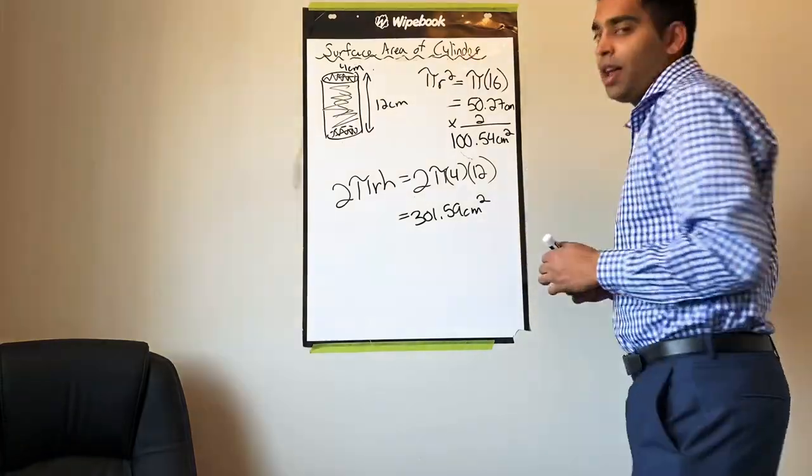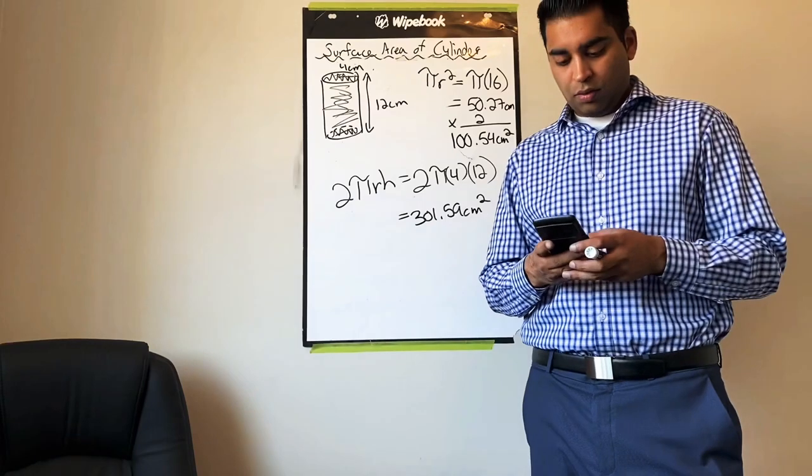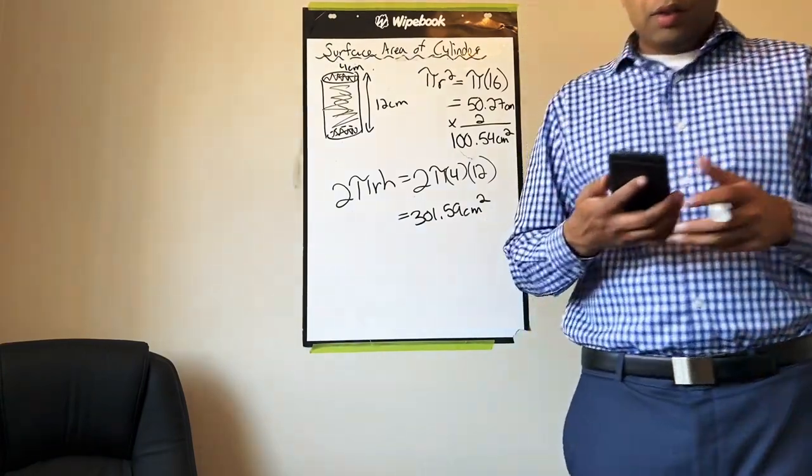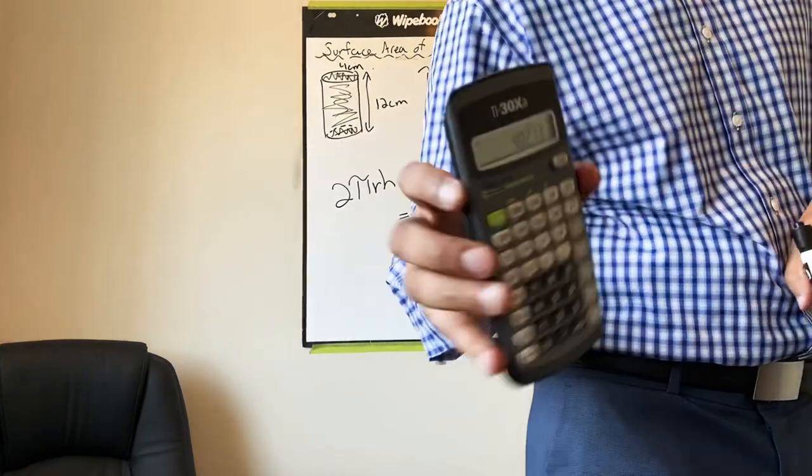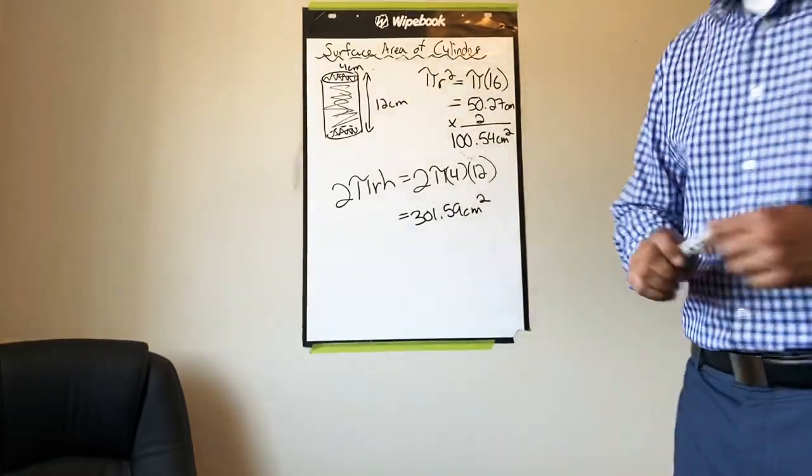301.59 plus 100.54, you should get if you're following along at home, 402.13 centimeters squared.